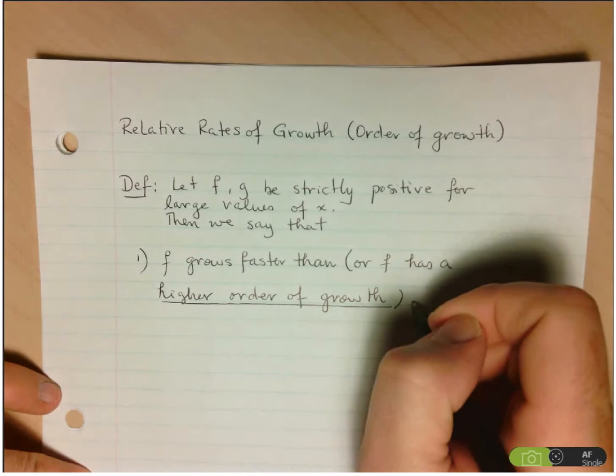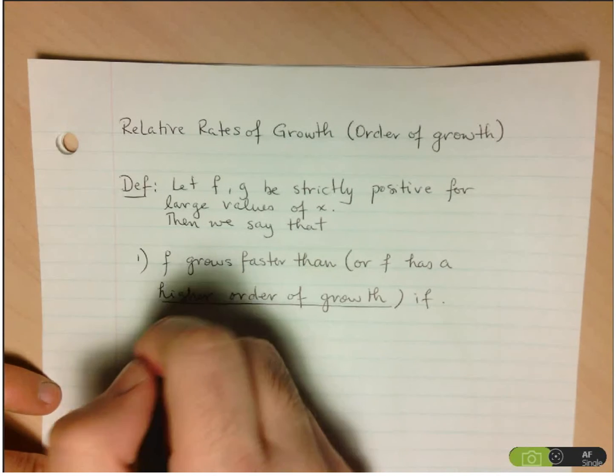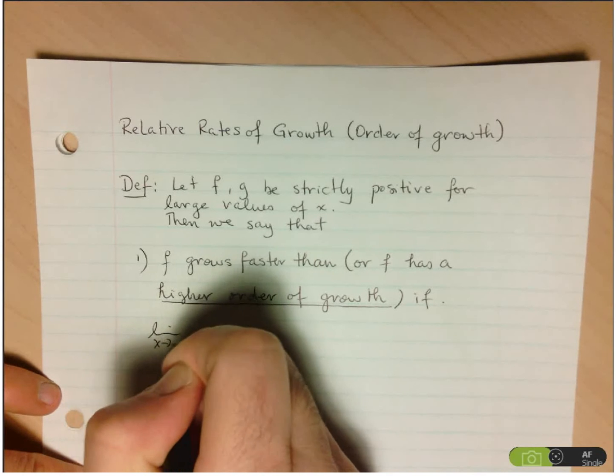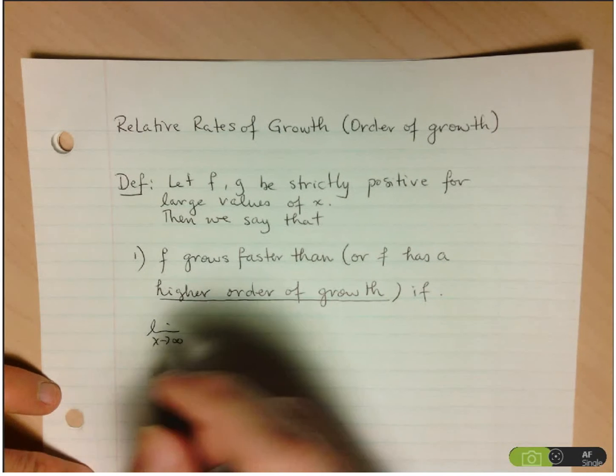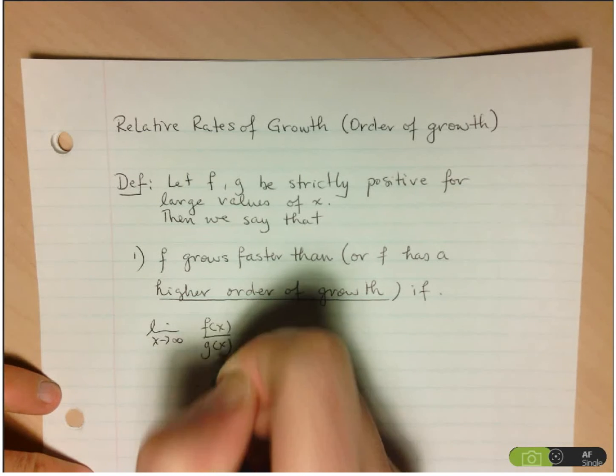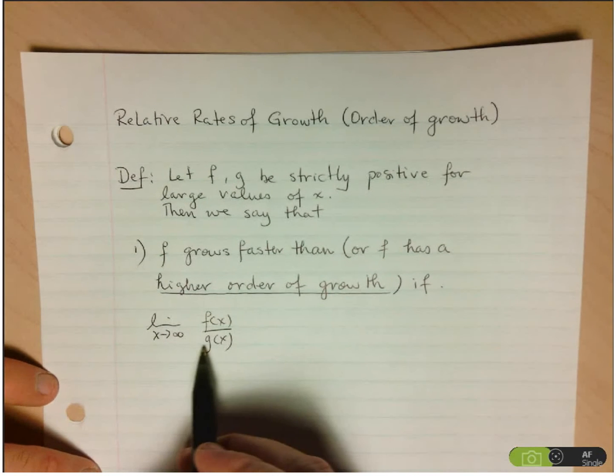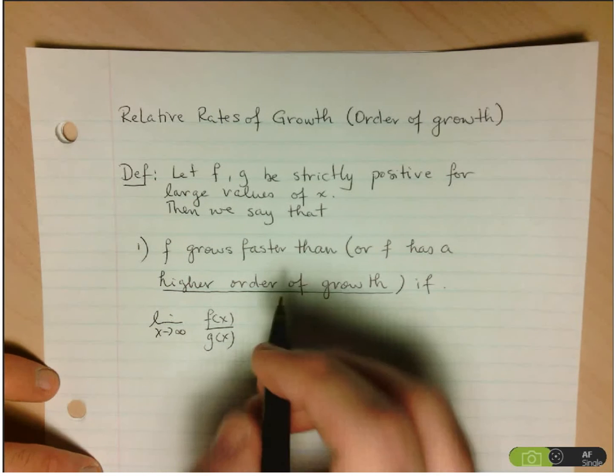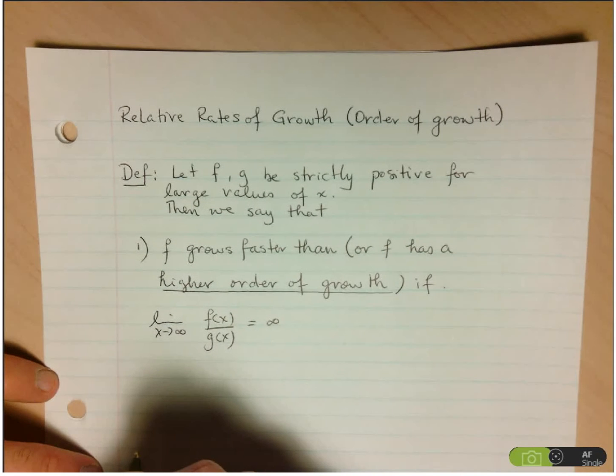And the condition that we need is we'll take the limit as x goes to infinity, not surprisingly, and we're going to compare the quotient of f at x over g at x. And if g at x becomes insignificant as x gets larger and larger, then this limit should be equal to infinity.